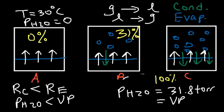By the way, this temperature is also known as the dew point. The temperature at which the relative humidity is 100%, or when the partial pressure of water equals the vapor pressure of water, that temperature is the dew point. Because if you cool it down any further, condensation will exceed evaporation and the liquid will begin to condense. In the air, it would appear as fog, or you could see clouds or precipitation occurring.